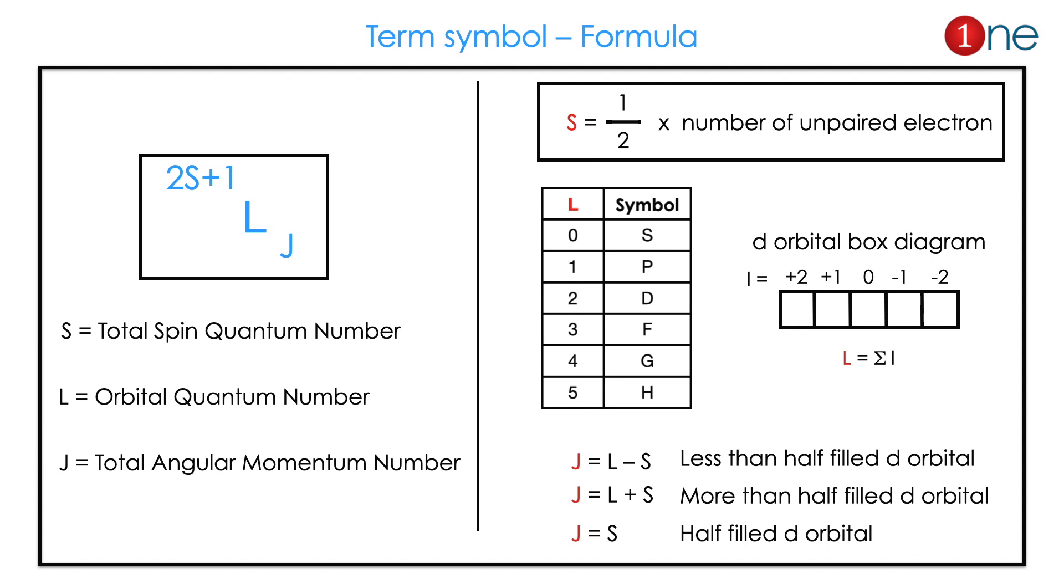J equals L minus S for less than half filled orbital, J equals L plus S for more than half filled orbital, J equals S for half filled orbitals. So you should remember the formula 2S plus 1, L and J.